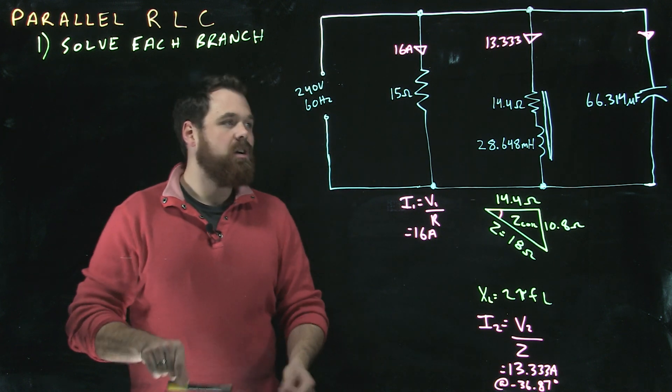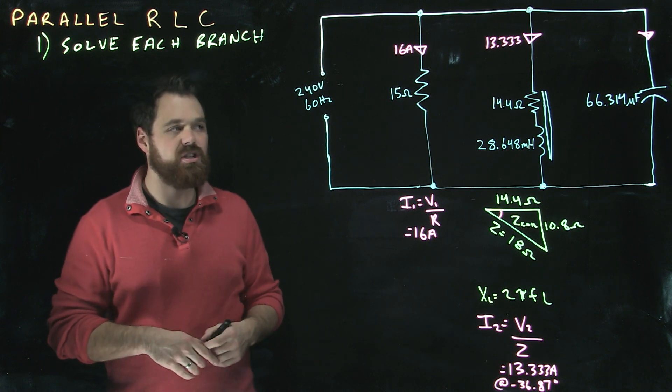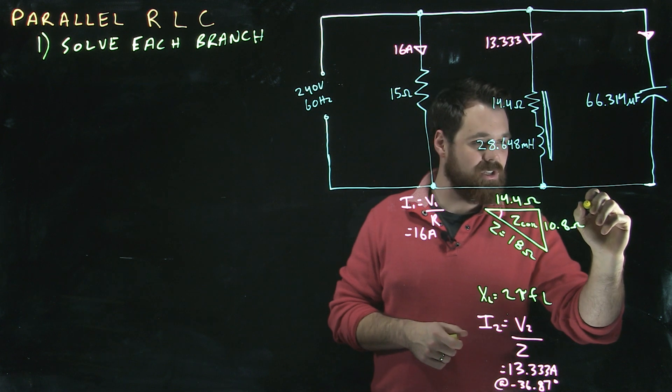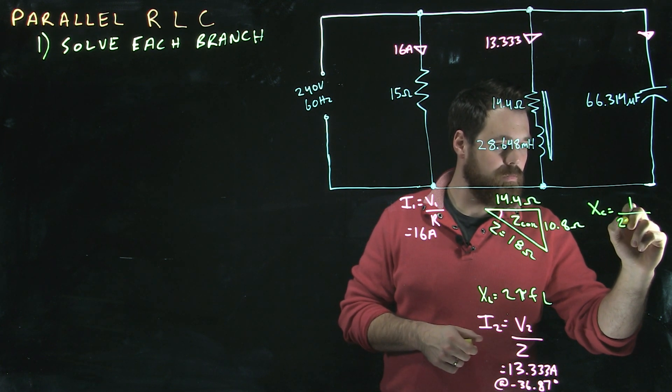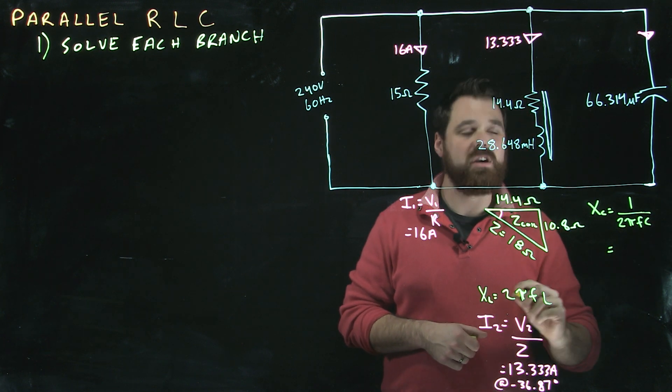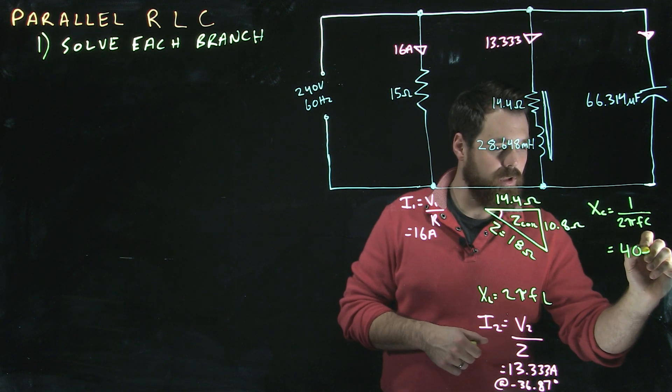The last branch is our capacitor. We have a microfarad rating, 66.314 microfarads. So we can go XC equals 1 over 2πFC. In this case, we get a capacitive reactance of 40 ohms.